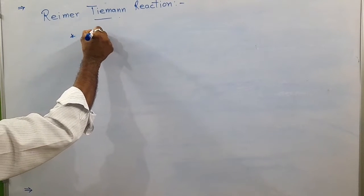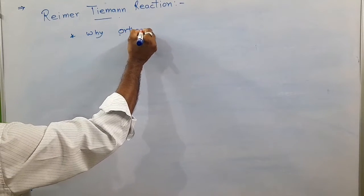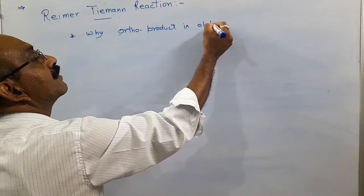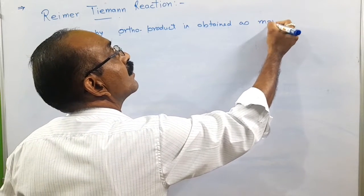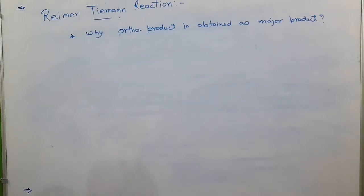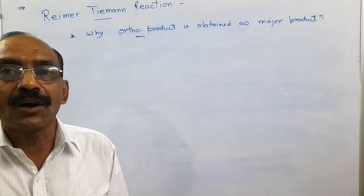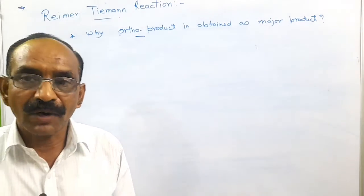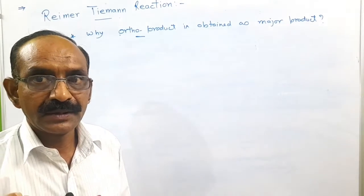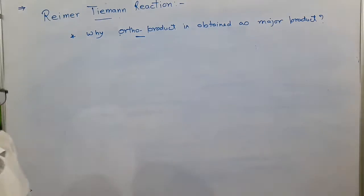We are discussing why the ortho product is obtained as the major product. Remember one rule: greater the stability of any species or molecule, greater will be its tendency to be formed. In other words, higher the stability of any species, higher will be its tendency to be formed.